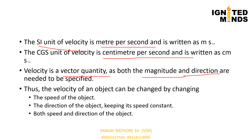The velocity of an object can be changed in three ways. First, by changing the speed while keeping the direction the same — for example, a ball dropped from the top of a building changes velocity because its speed changes even though its direction of motion remains the same. Second, by changing the direction while keeping the speed the same — for example, a car moving in a circular path changes velocity because its direction changes although it moves at constant speed. Third, by changing both speed and direction together.